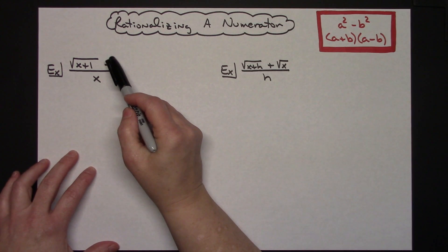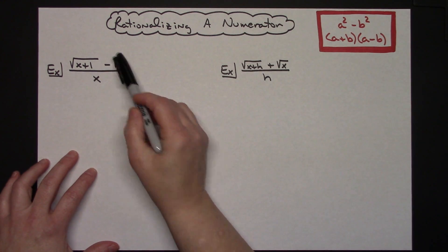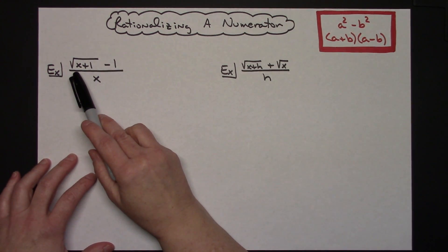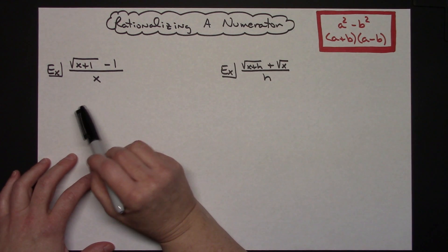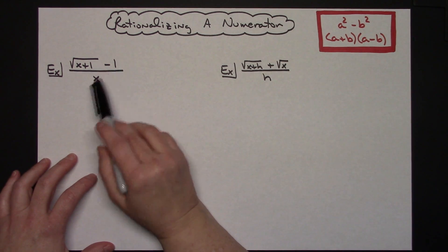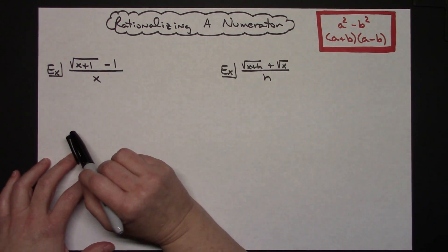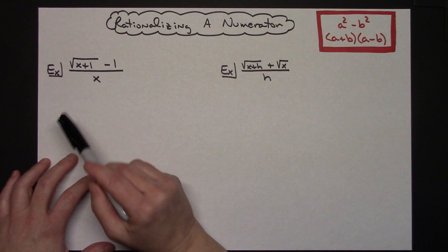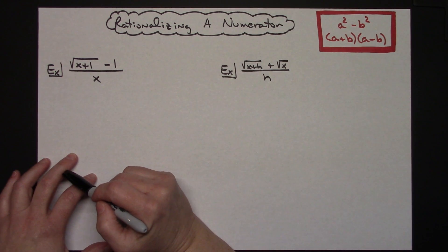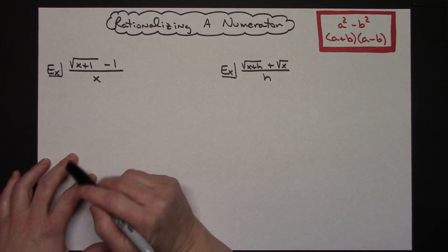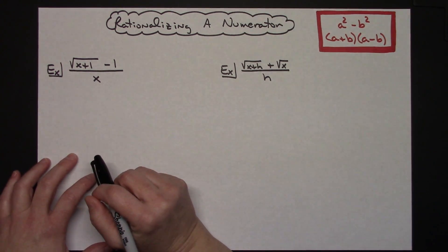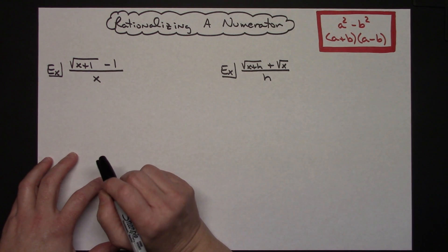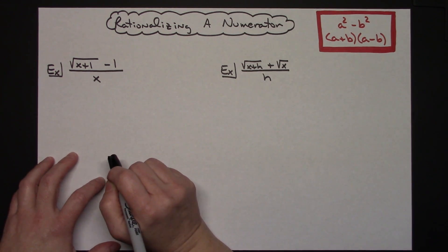For this first example, we're going to be looking at the square root of x plus 1, minus 1, all over x. It's this numerator that we're going to want to rationalize. We're going to do it the exact same way that you rationalize the denominator — you are going to multiply by the conjugate.